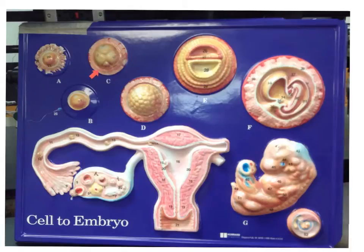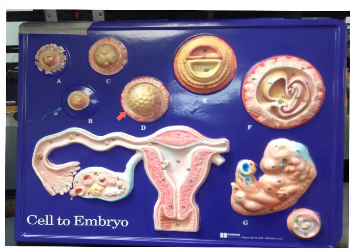Moving on up we see the cleavage stage. Here we have cell division at the four-cell stage. That is followed by the morula stage, which is a multi-cell stage of development. As we continue we will start to see our embryonic vesicles.